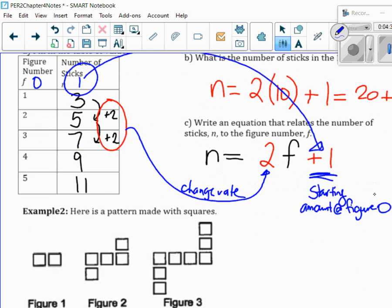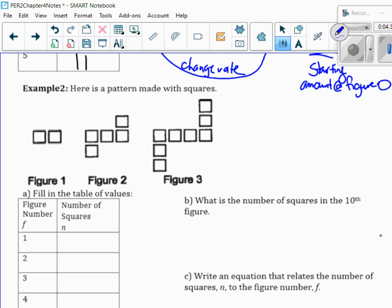Okay, so let's try this again for example 2. So, here's a pattern. Figure 1 has 2 squares. Figure 2 has 1, 2, 3, 4, 5, 6, 7, 8. So, what's happening each time here? It is going up by 3.